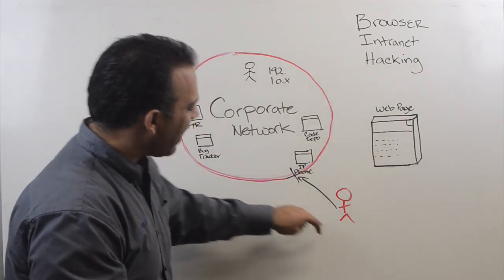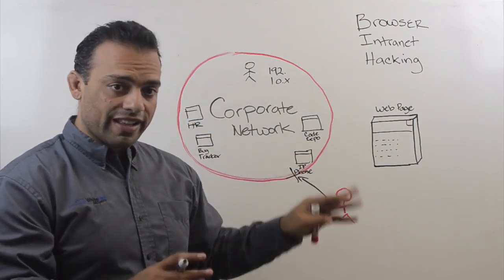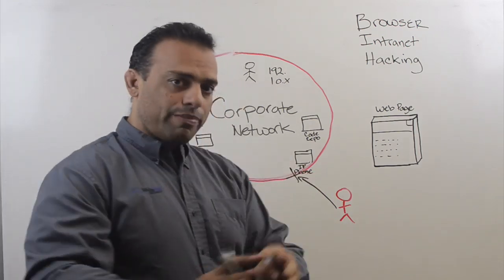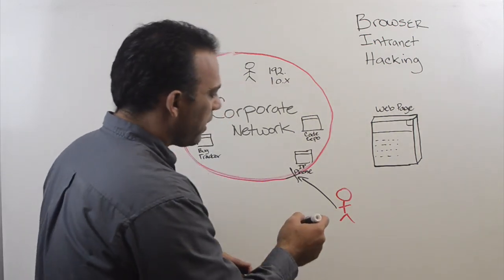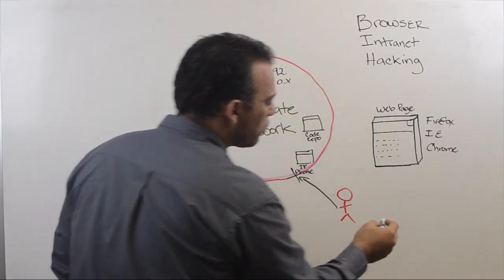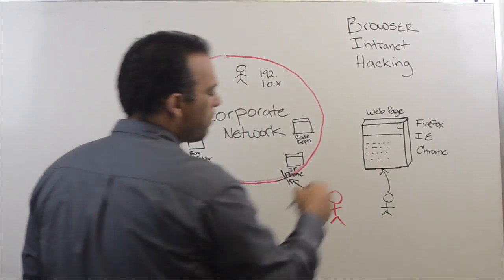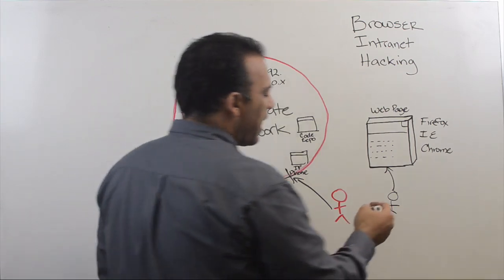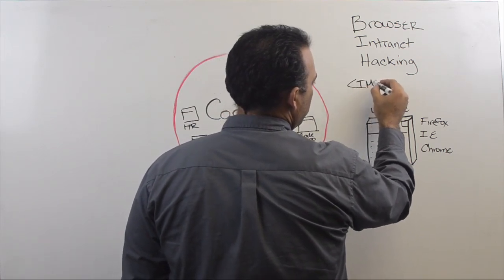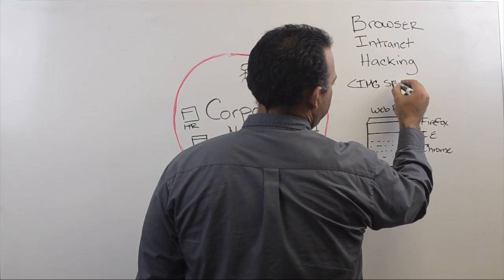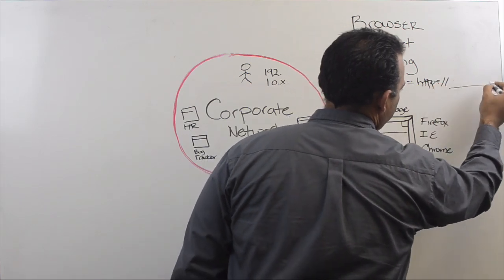So the question is, how does the bad guy bypass the perimeter corporate network firewall to get access to these crown jewels on the inside? To set up this concept, you have to be familiar with general web page functionality. When you go to a website with a browser, a web page will contain code — HTML and JavaScript normally — and inside the page will be image tags: image source equals, and then a web address, http colon, and then some website address.